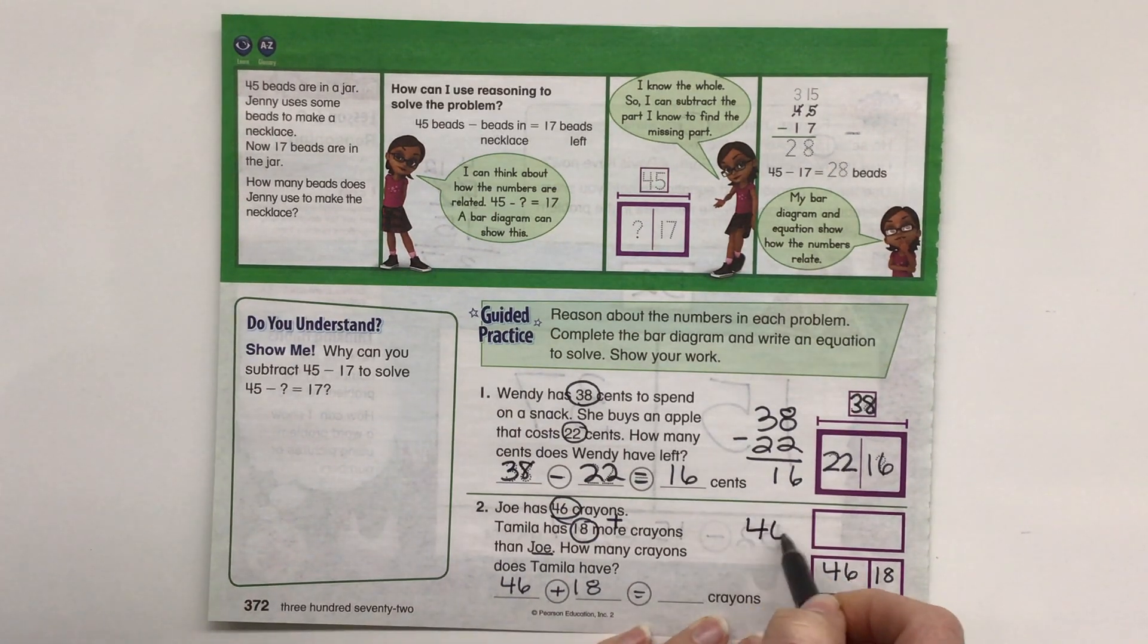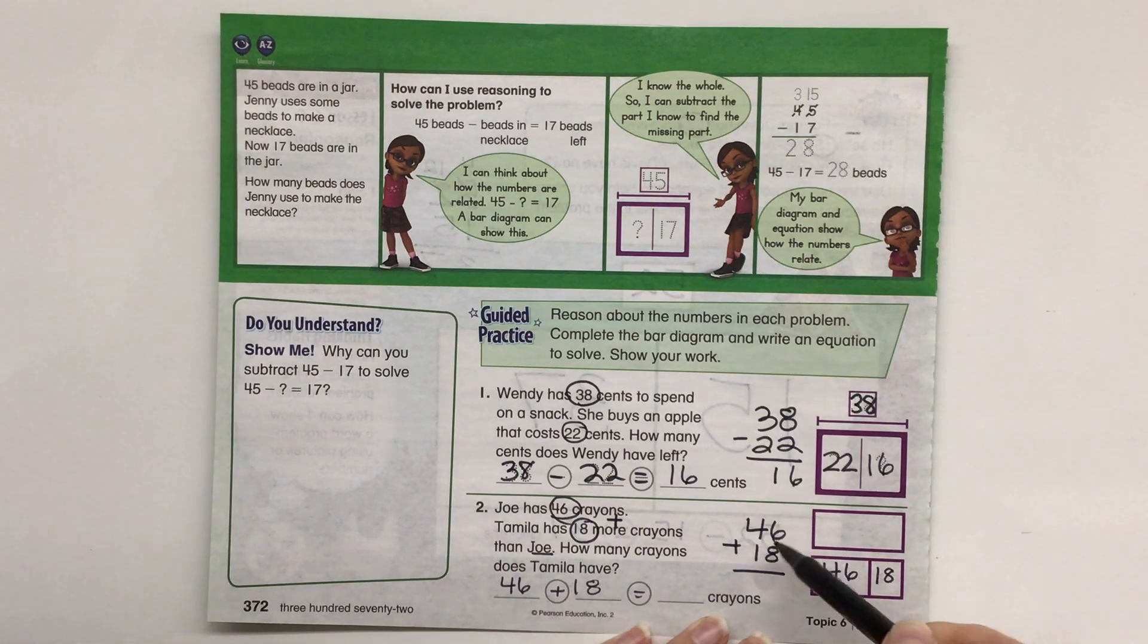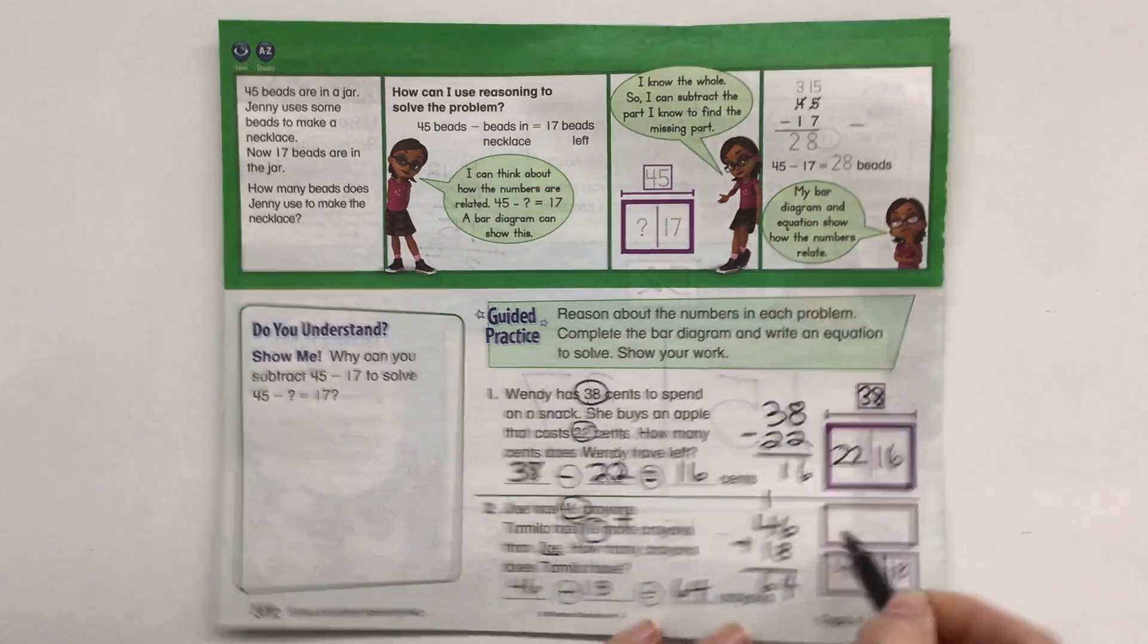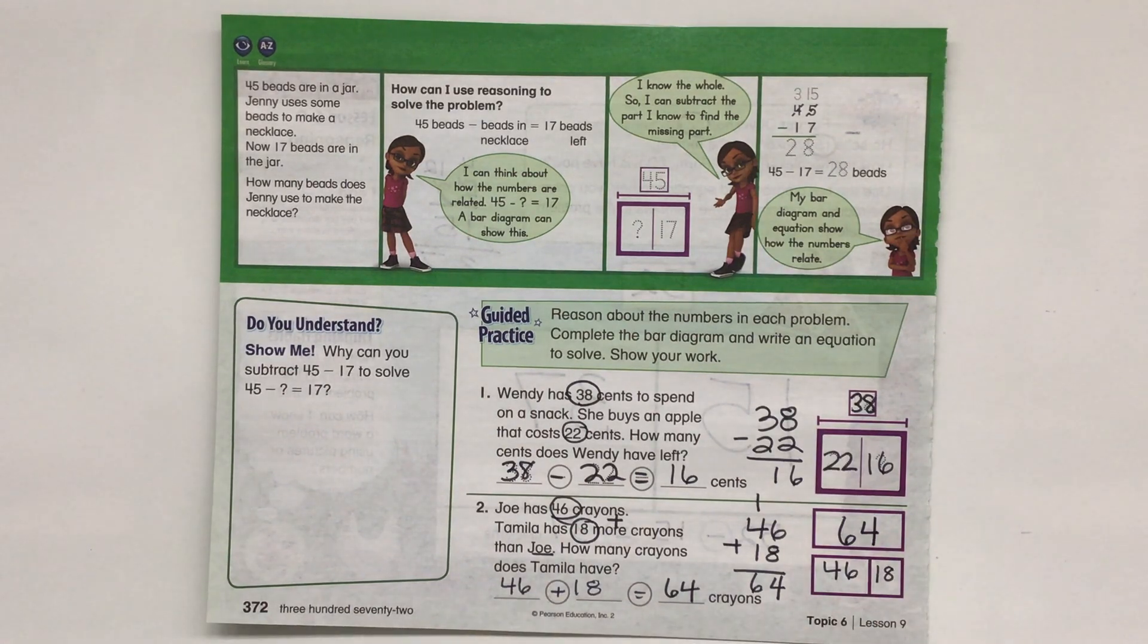So 46 plus 18. 6 plus 8 is 14. Regroup. 4 plus 1 is 5, plus 1 more is 6. 64 total crayons there.